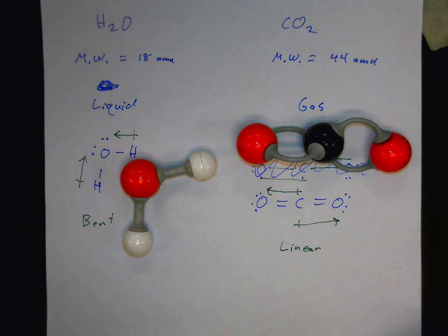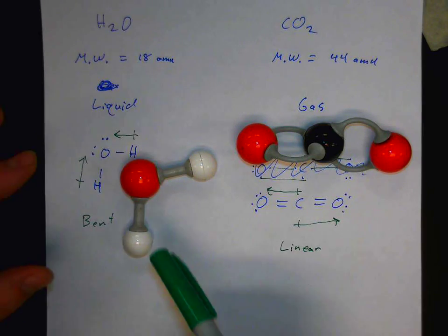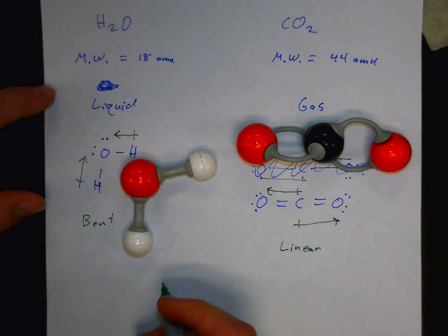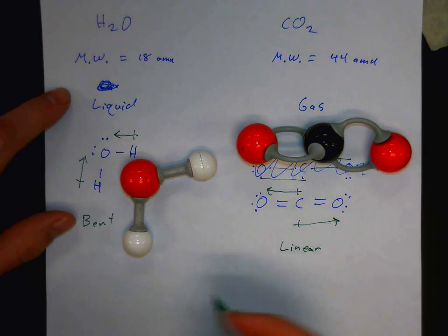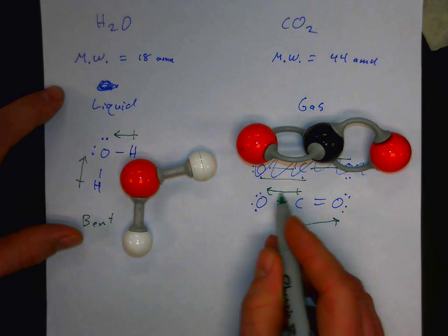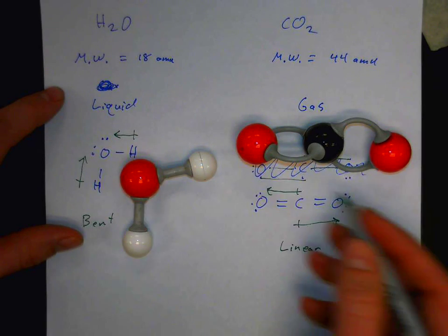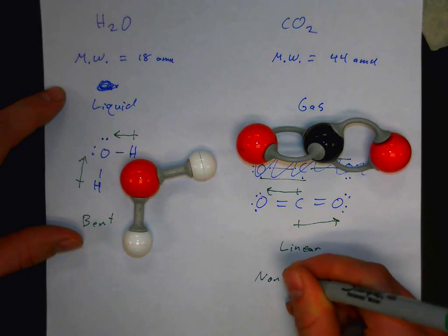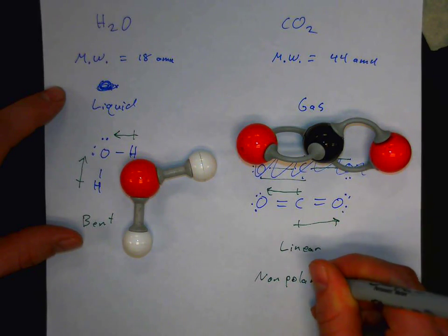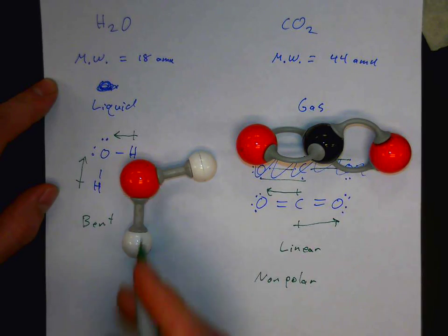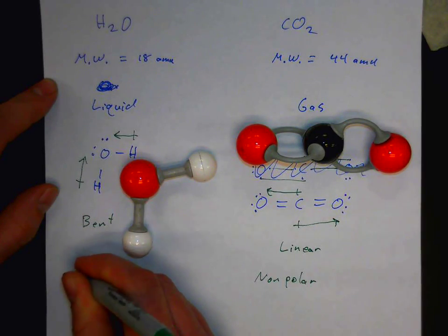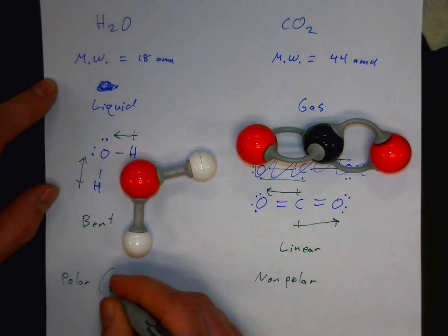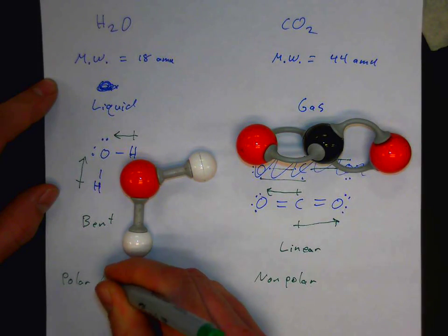Some shapes can cancel out polarity. Even though both molecules have polar bonds, the bent shape of water does not cancel its dipoles, so water remains polar. In carbon dioxide, the linear shape causes the two dipoles to cancel out, making CO₂ nonpolar. Water, with its bent shape, is polar — and more specifically, it has a special type of dipole called a hydrogen bond.